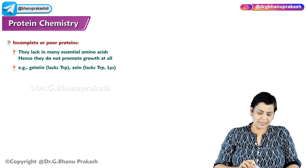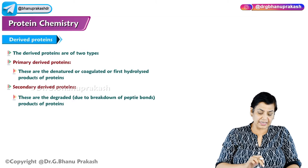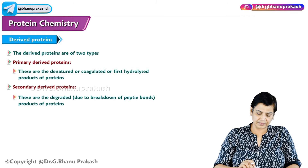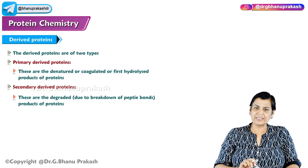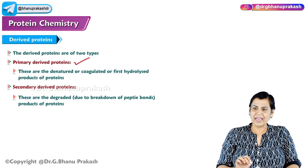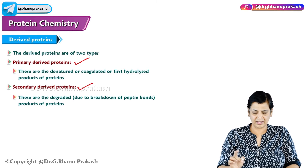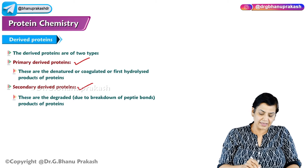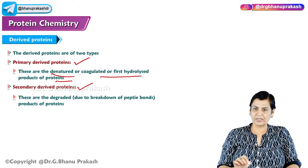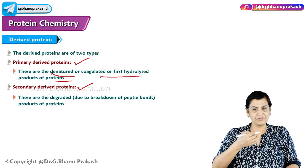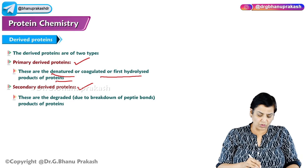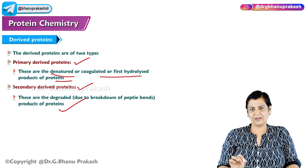After this classification, we discuss derived proteins, which are of two types: primary derived proteins and secondary derived proteins. Primary derived proteins are denatured, coagulated, or first hydrolyzed products. Secondary derived proteins are the further degradation products of primary derived proteins.